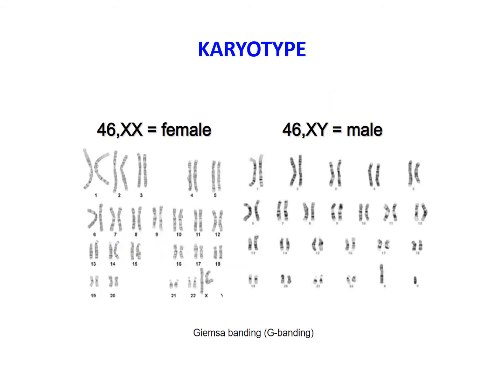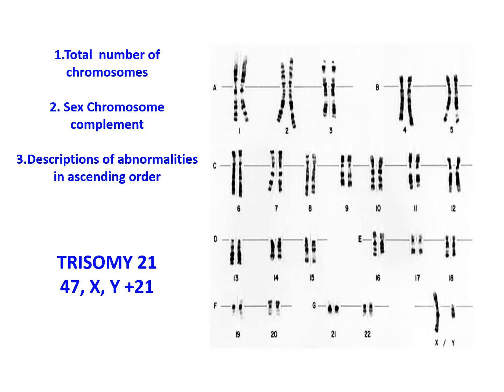This is a comparison of the karyotype of a normal female versus a normal male. Karyotypes are usually described using a shorthand system of notations in the following order: first is the total number of chromosomes, followed by the sex chromosome complement, and third is the description of abnormalities in ascending numerical order. For example, a male with trisomy 21 is designated as 47,XY,+21. Notations denoting structural alterations of chromosomes and their corresponding abnormalities will be described later in the lecture.